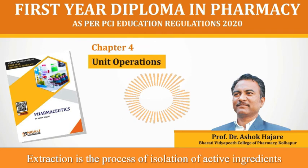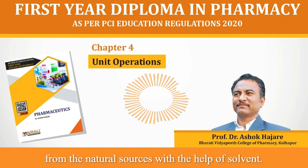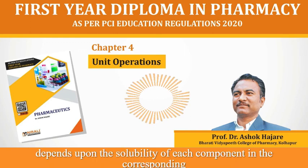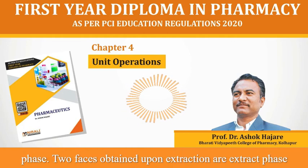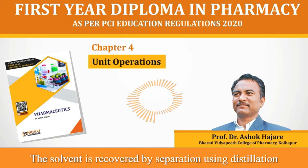Extraction is the process of isolation of active ingredients from raw materials of either plants or animals, or directly from natural sources, with the help of a solvent. The transfer of components from the feed to the solvent depends upon the solubility of each component in the corresponding phase. Two phases obtained upon extraction are the extract phase and the raffinate phase. The solvent is recovered by separation using distillation.